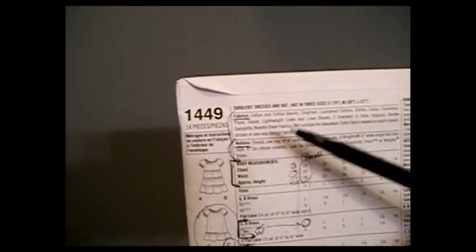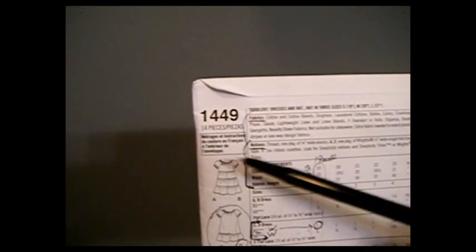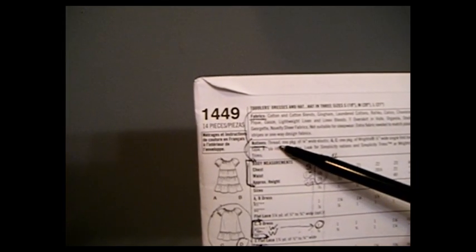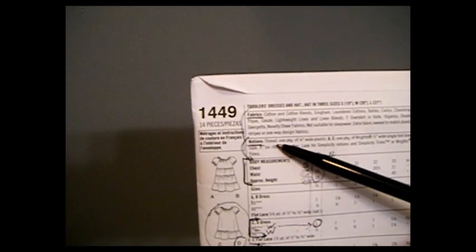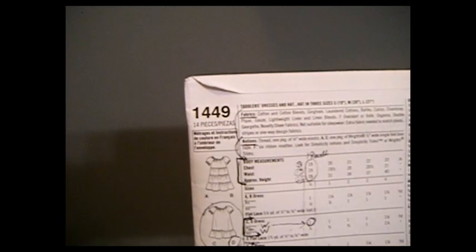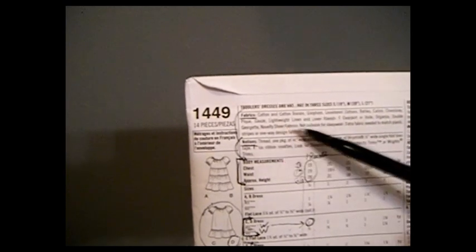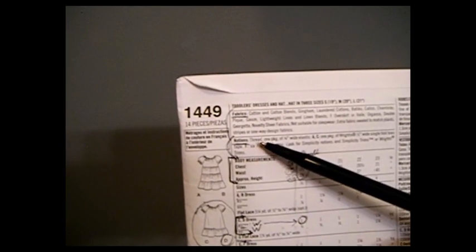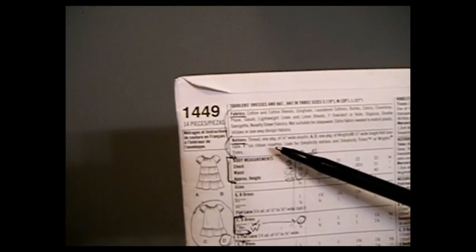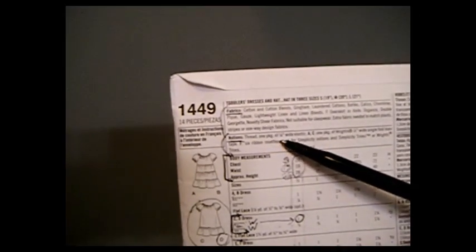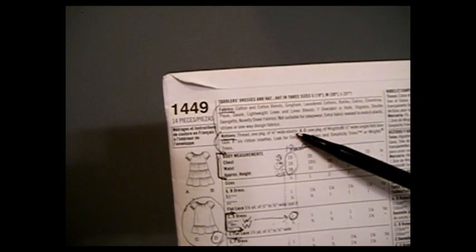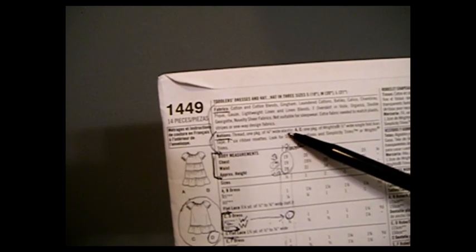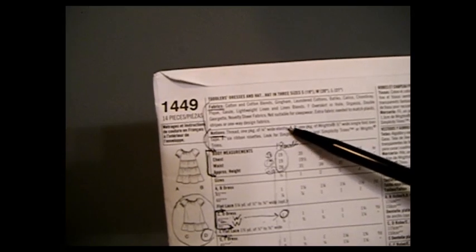Now we're here at notions. Notions tells us what we need to make this dress outside of the fabric. So for notions, we need matching thread. So pink fabric, pink thread. Black fabric, black thread. White fabric or white-based background fabric, white thread. One package of quarter-inch white elastic. I showed you that in the other video, so we got a package of quarter-inch white elastic. We're not making A and C, so we bypassed this.